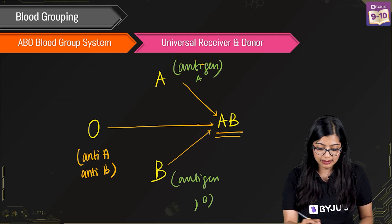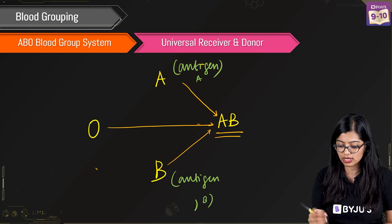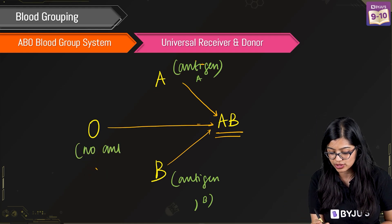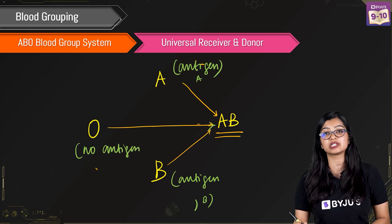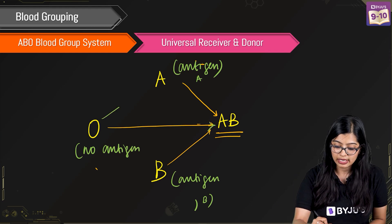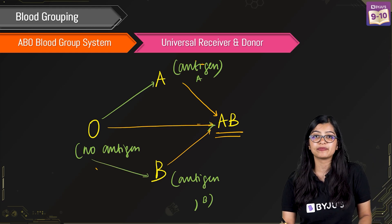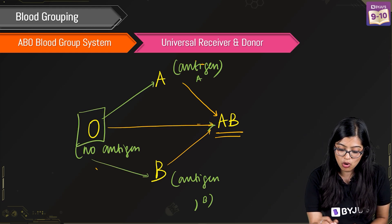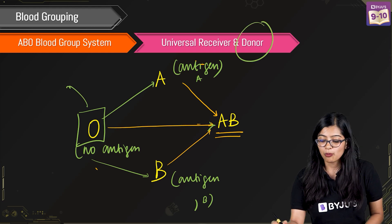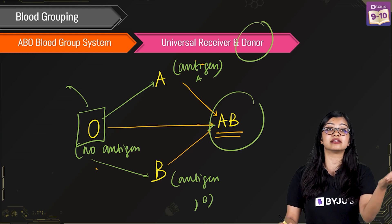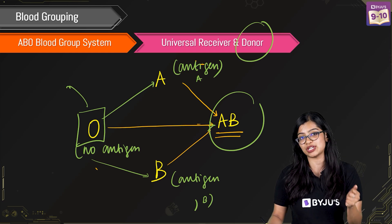Since there is no antigen present on blood group O, it is acceptable to donate to a person with A or to a person with B. Therefore, a person with blood group O is considered to be a universal donor, while a person with AB — since they can receive blood from everybody else — is considered to be a universal recipient.